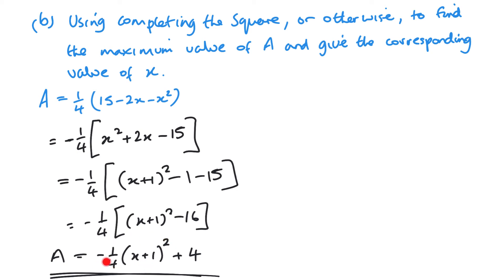So for me to get the maximum value, this negative value would have to be 0. It's the only way to have a maximum value. So when this is 0, the area will be 4. So the maximum area is 4.